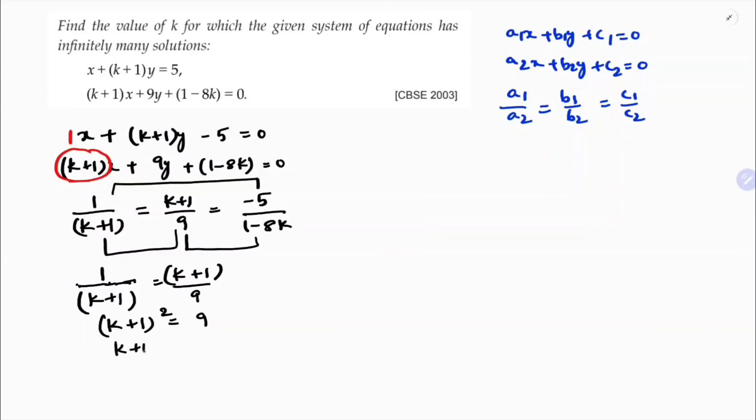So k+1 equals root 9, so k+1 equals plus or minus 3. If k+1 is 3, k equals 2. If k+1 is minus 3, k equals minus 4.